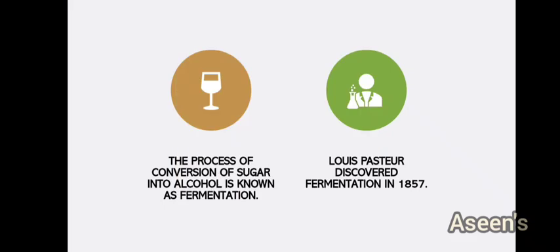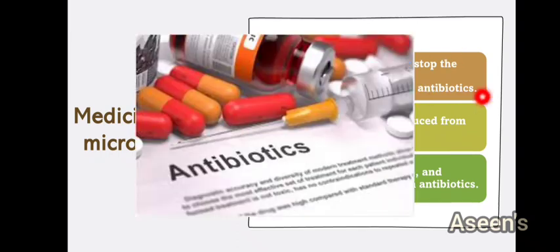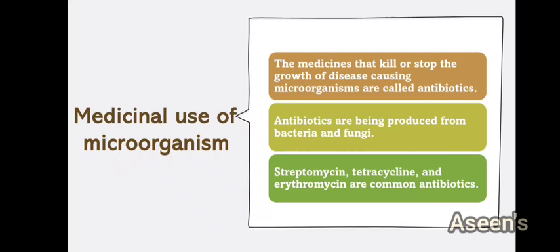Now let's talk about the medicinal use of microorganisms. Microorganisms not only help with food but also produce medicines. Medicines that kill or stop the growth of disease-causing microorganisms are called antibiotics. 'Anti' means opposite to, and 'biotics' refers to tiny microorganisms — so antibiotics kill the microorganisms that cause disease. Antibiotics are produced from bacteria and fungi.